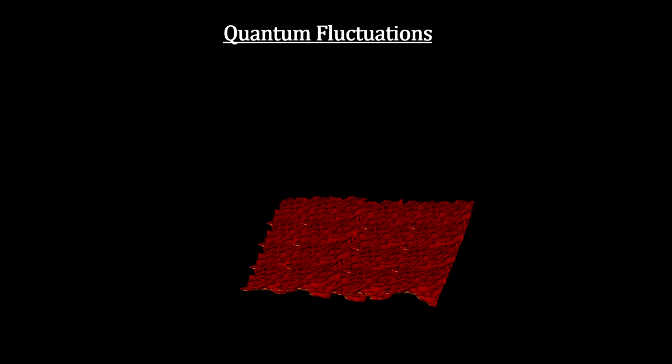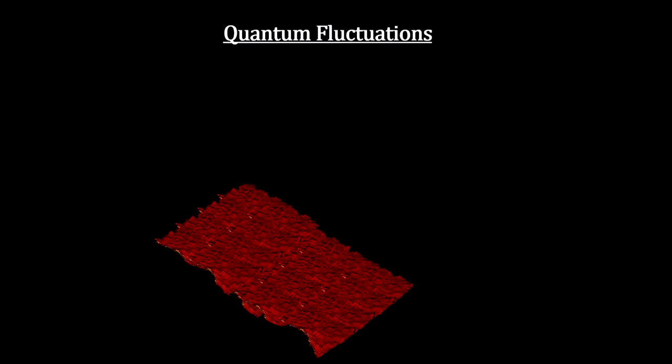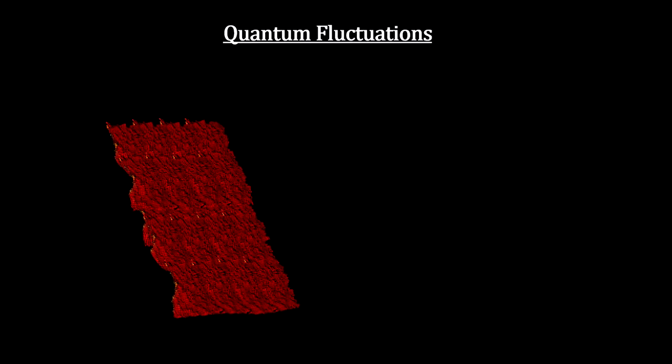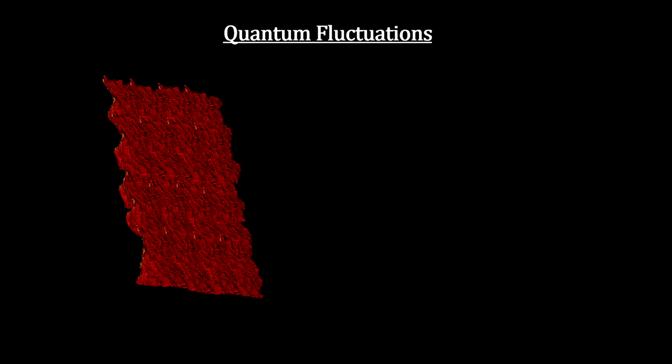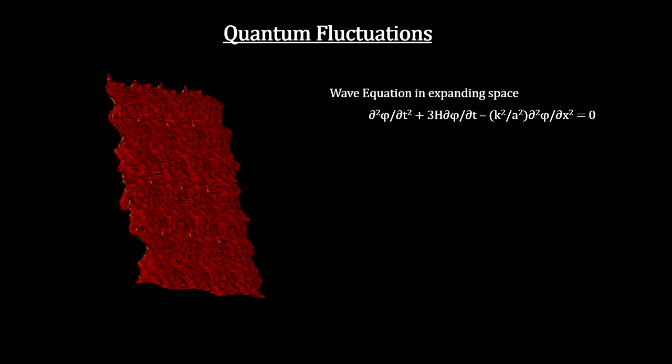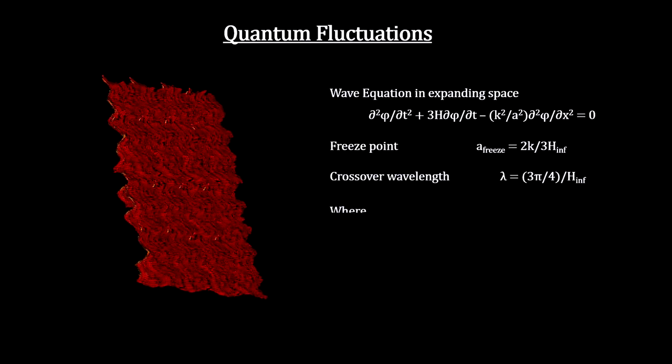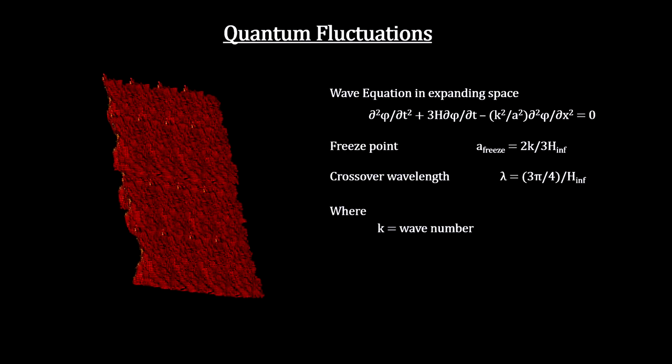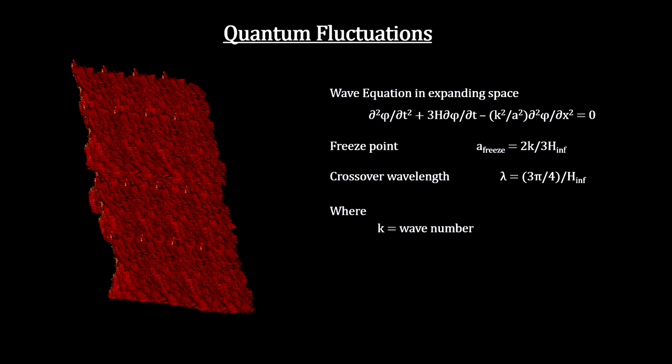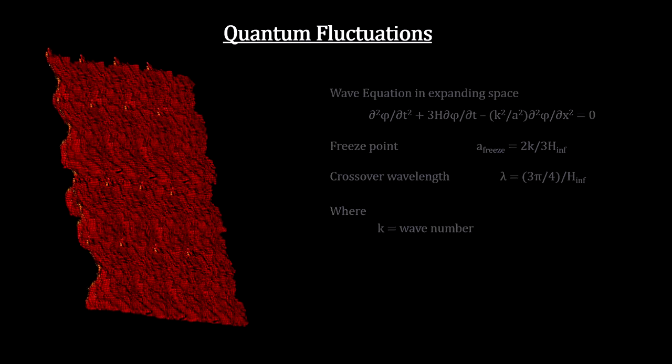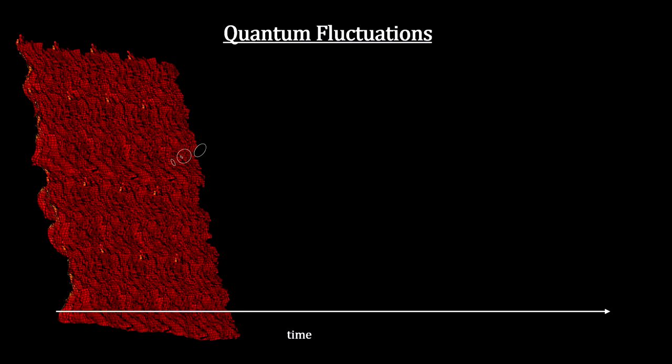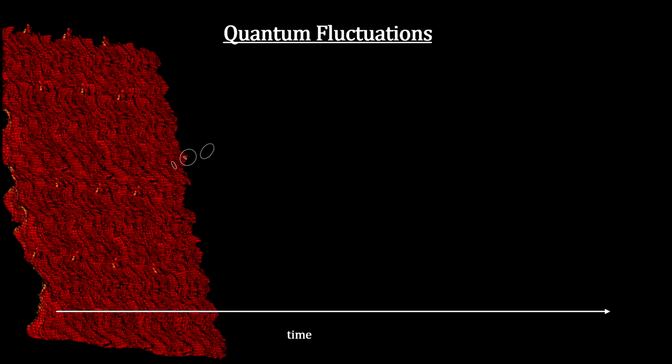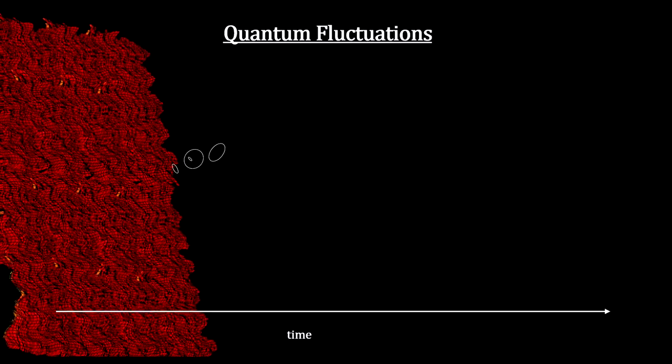The zero-point energy quantum fluctuations are short, small, and create localized deviations in energy density. Under normal circumstances, the restorative force returns the deviation to normal almost instantly. But an exponentially expanding space weakens the restorative force. Each wave stretches with the expansion and freezes once it reaches the size of the horizon.